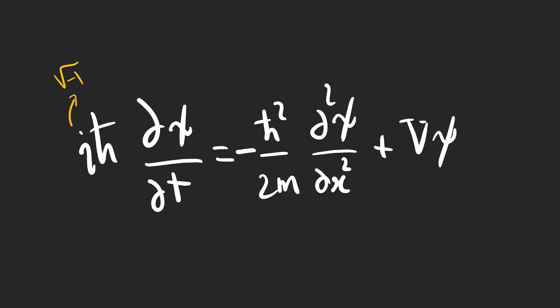Where i is the square root of minus 1, which is a complex number, H is the Planck's constant, M is the mass of the particle, V is the potential energy influencing the particle, and psi is called the wave function.